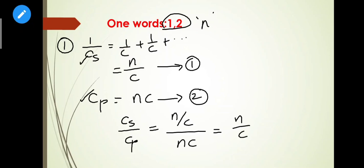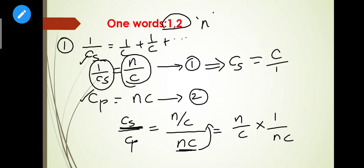Cs is C/n, Cp is nC. Dividing first equation by second equation: C/n divided by nC. Taking reciprocal: (C/n) × (1/nC) = 1/n². So the ratio is 1:n². The option is 1:n², that is correct.